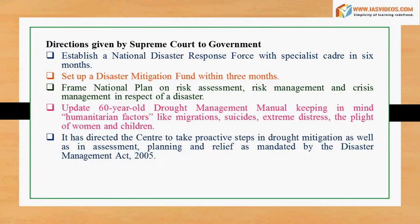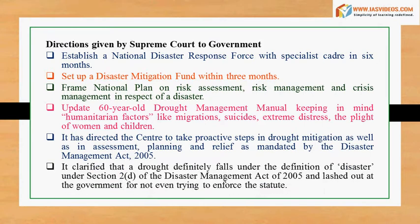The court directed the Center to take proactive steps in drought mitigation as well as in assessment, planning and relief as mandated by the Disaster Management Act, 2005. It clarified that a drought definitely falls under the definition of disaster under Section 2D of the Disaster Management Act of 2005, and lashed out at the government for not even trying to enforce the statute.